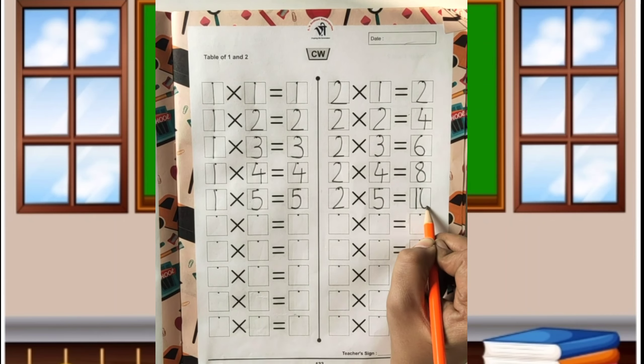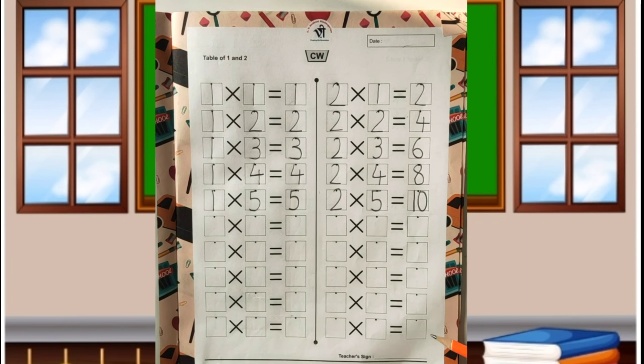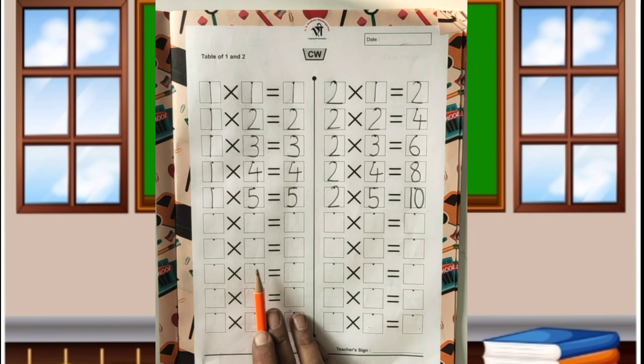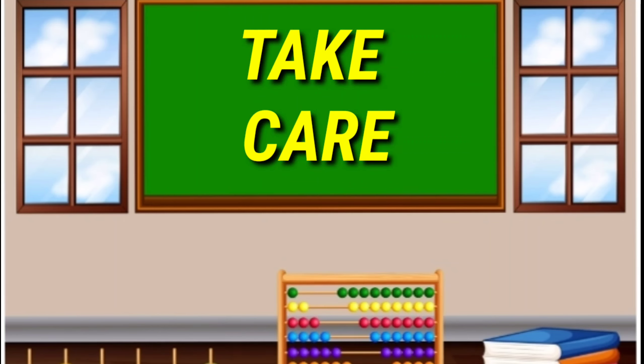Okay. This way you have to complete the table of two. Two, ten's are twenty. Okay. Bye, bye, bye lovely kids. I'll be right back. Thank you.